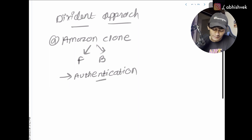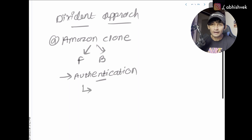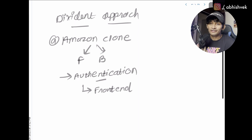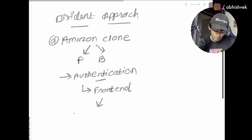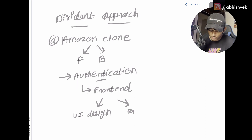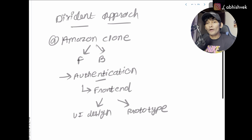In the authentication part, I'll divide it into front-end and back-end. Let's go with the front-end approach. On the front-end side, you'll be dividing it into two different sections: first, brainstorming — that is the UI design — and second, actually creating the widgets in Flutter, which I'll call the prototype.